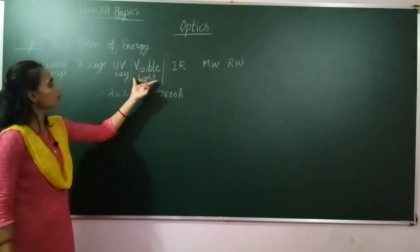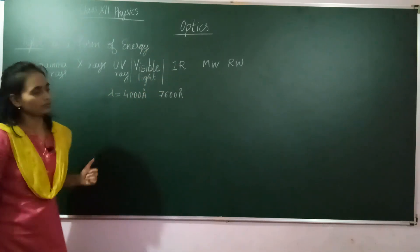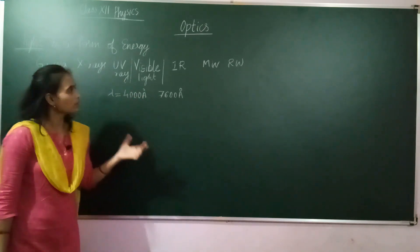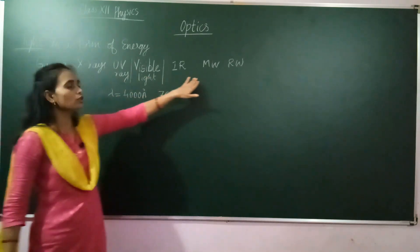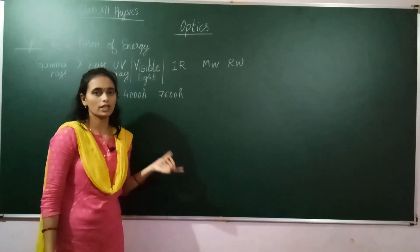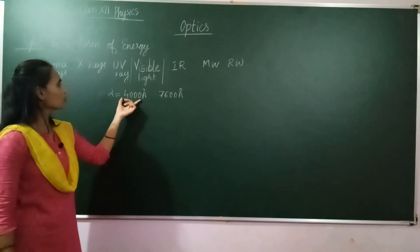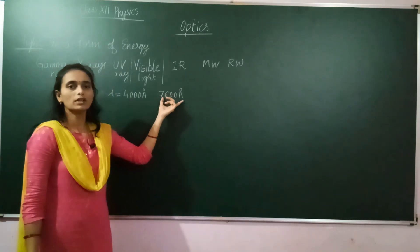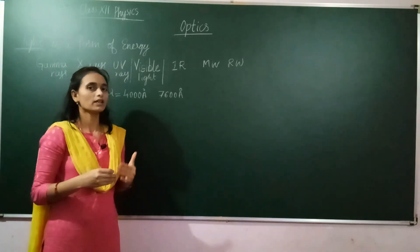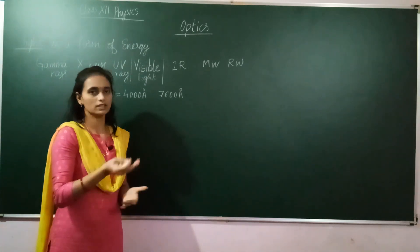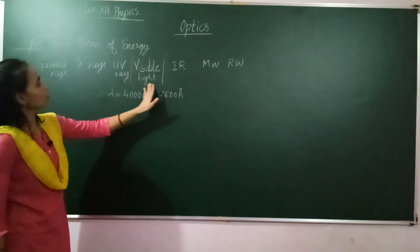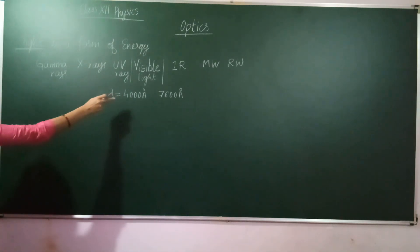In the electromagnetic spectrum, we will study only the visible light region, whose wavelength ranges from 4000 angstrom to 7600 angstrom. We study this region because it is the range we can sense through our eyes. The remaining rays cannot develop a proper voltage in our eyes, but this range from 4000 to 7600 angstrom can — that is why we call it visible light.